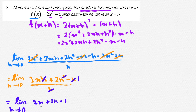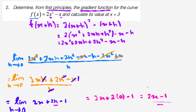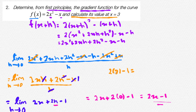Now, since there is only one term with h in it, we can simply sub in 0 for the h value. So this will be 2x plus 2 into 0, minus 1. This equates to your final answer of 2x minus 1. Now looking at the question, it says to calculate its value at x is equal to 3. To do this, we simply sub in 3 for the value of x. So it would be 2 into 3 minus 1, which is equal to 6 minus 1, which is equal to 5. So 5 is your final answer for this question.